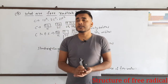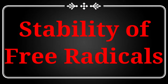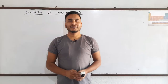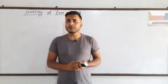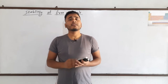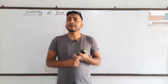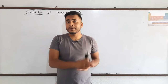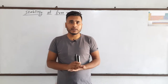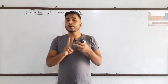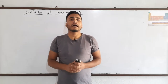Now let's see the stability of free radicals. There are many types: simple, allylic, and benzylic free radicals. Among them, which one is the most stable is what we need to know. In simple free radicals there are zero degree, one degree, two degree, and three degree free radicals. We need to compare their stability. We are going to read two approaches: first the hyperconjugation effect.